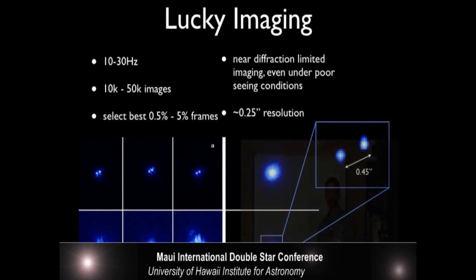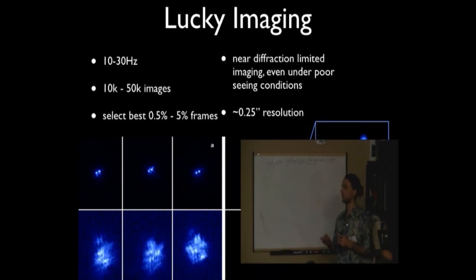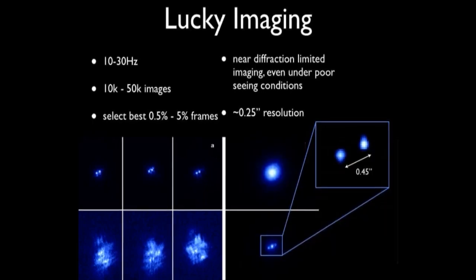You take 10,000 to 50,000 images, and then you select the best 0.5 to 5% of those frames. That allows you to get down near the diffraction limit for your telescope, for small telescopes anyways, even in poor-to-being conditions.